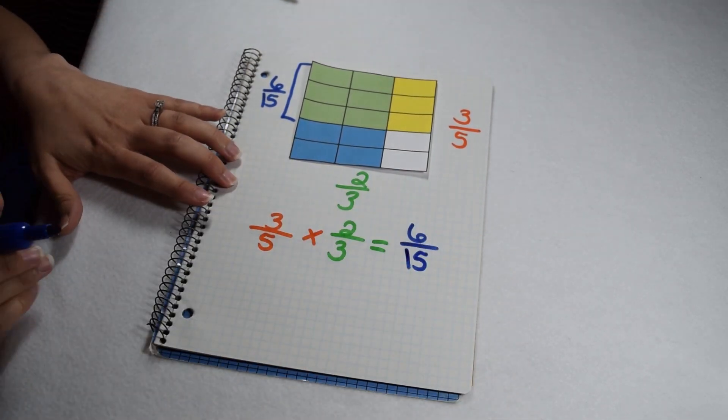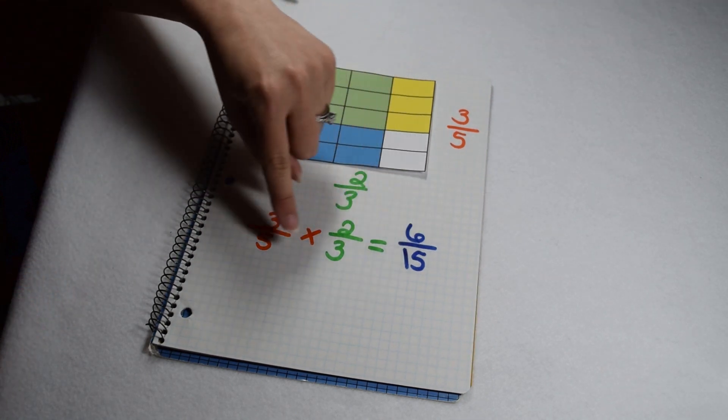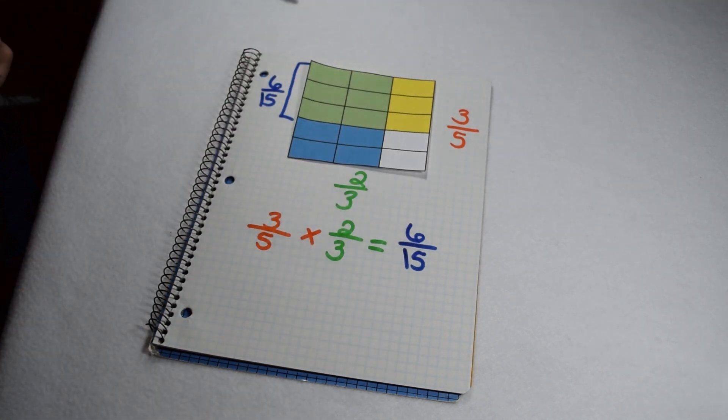If we check by multiplying our values, 3 times 2 does give me 6. 5 times 3 gives me 15. So both our problem and our area model match up.